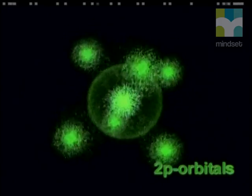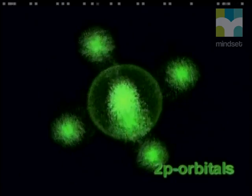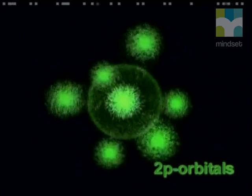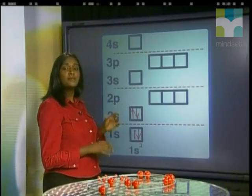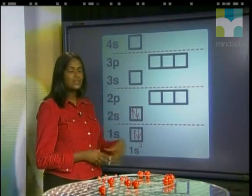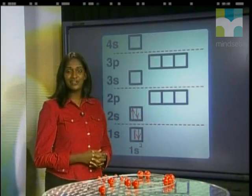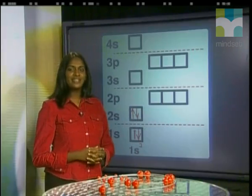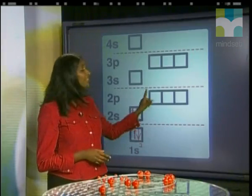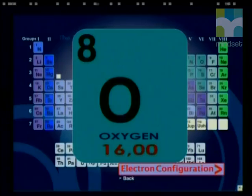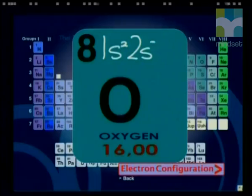A P-orbital can hold a maximum of two electrons. Three P-orbitals are arranged together to hold a total of six electrons. For example, oxygen has a total of eight electrons, and its electron configuration is 1S², 2S², 2P⁴.